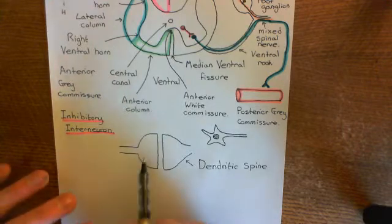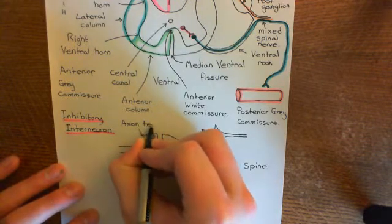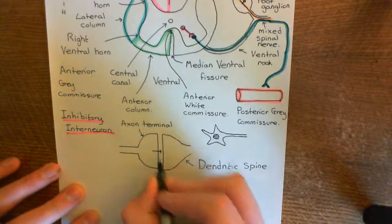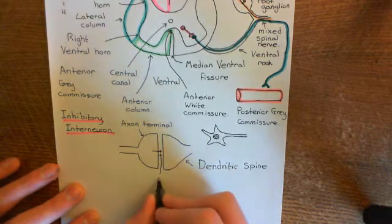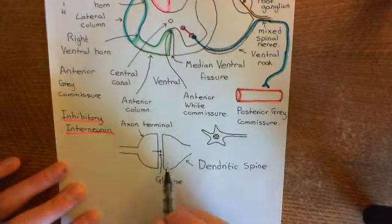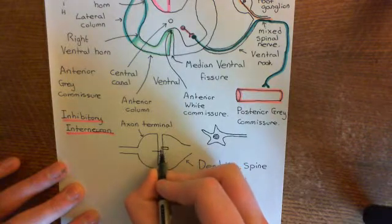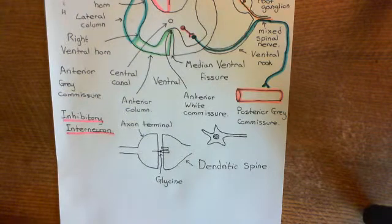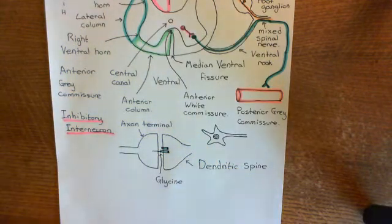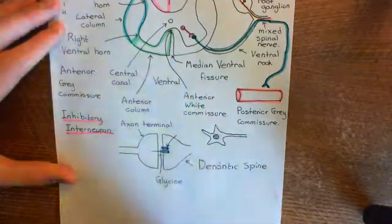The inhibitory interneuron's axon terminal is going to release glycine into the synaptic cleft to try and inhibit the alpha motor neuron. So this is releasing glycine. Now, how is glycine actually going to inhibit this alpha motor neuron? Basically, we have receptors for glycine in the membrane of this dendritic spine. Here is the glycine receptor — I'll colour it in in turquoise. On the membrane of these dendritic spines, you will have glycine receptors, often abbreviated as GlyR.